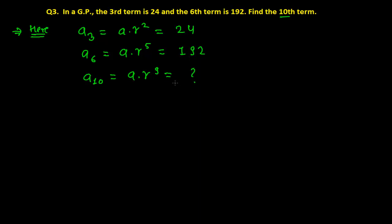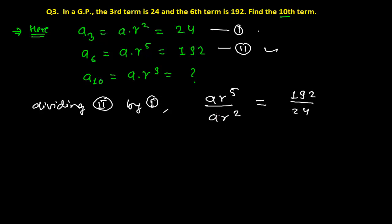I think we need to do something from here. Let me suppose this is the first equation and this is the second equation. If I divide the second equation by the first equation, what we'll get? We need to divide this equation by this, so we'll get a r to the power 5 divided by a r to the power 2 equals 192 divided by 24.